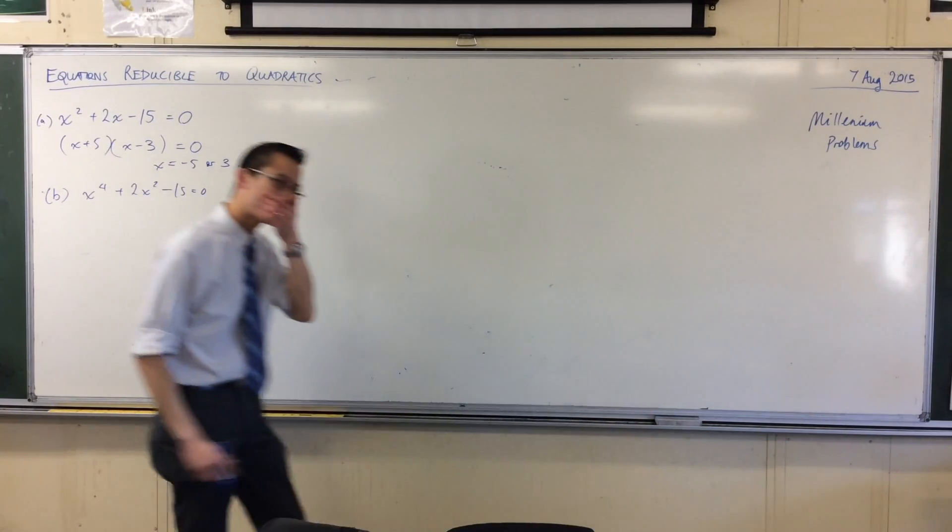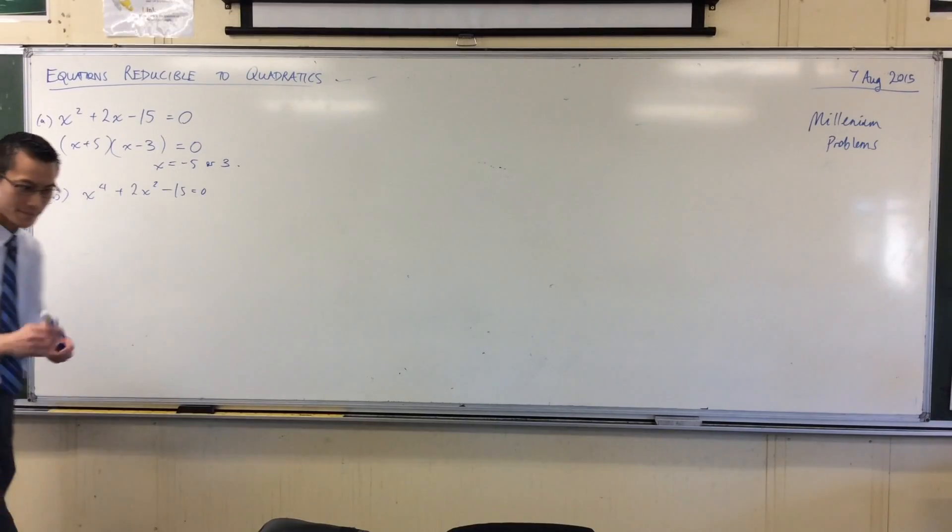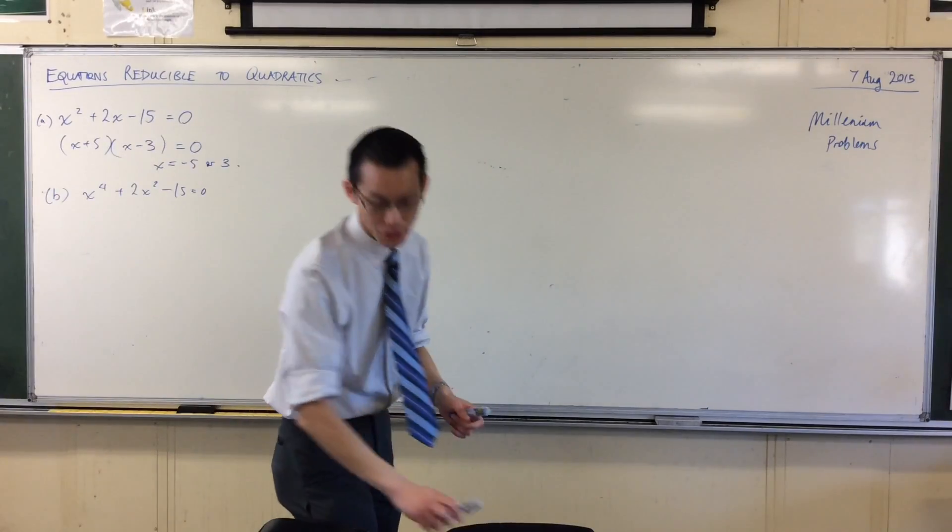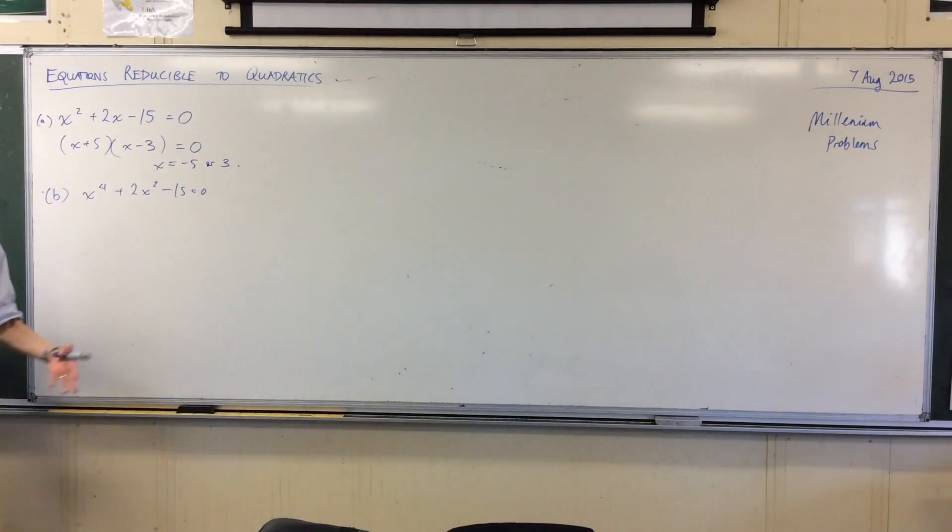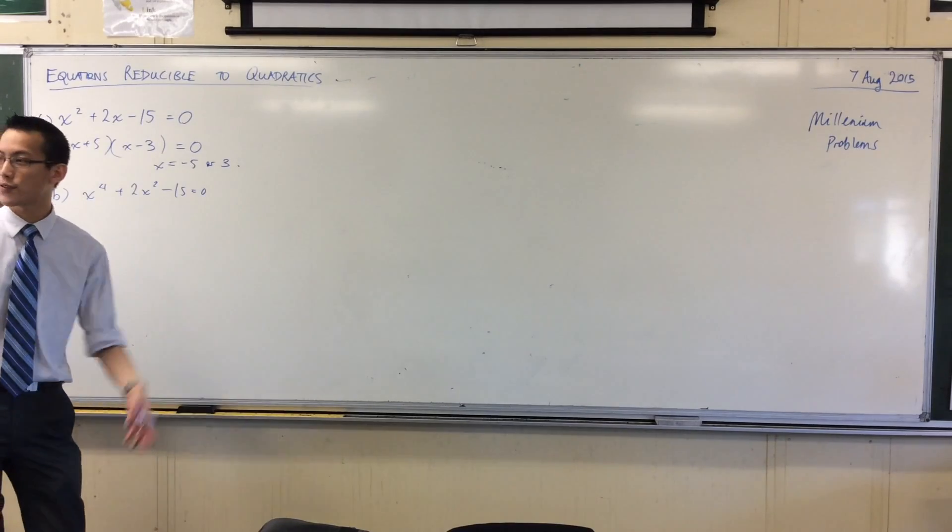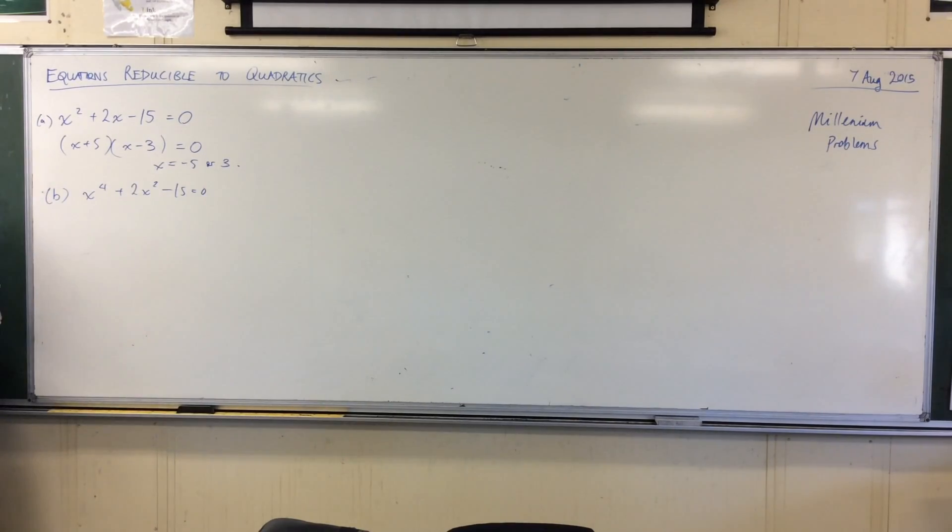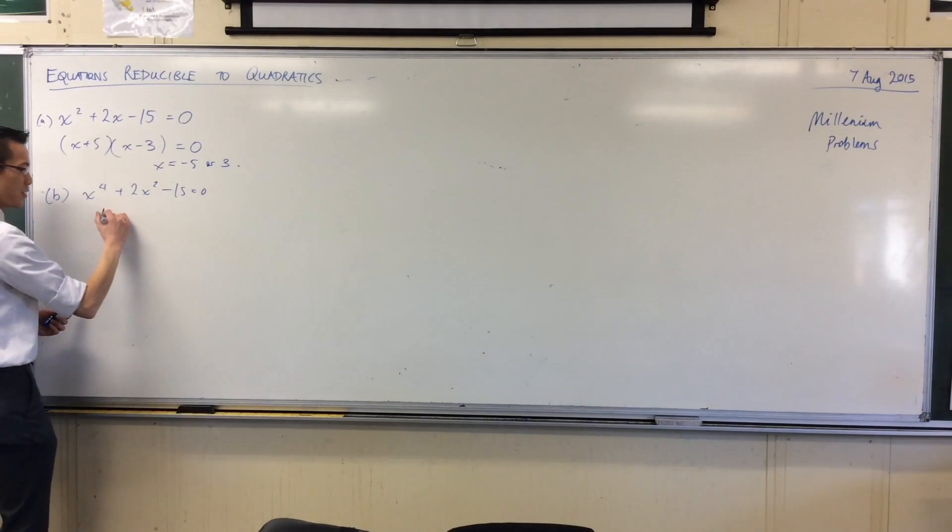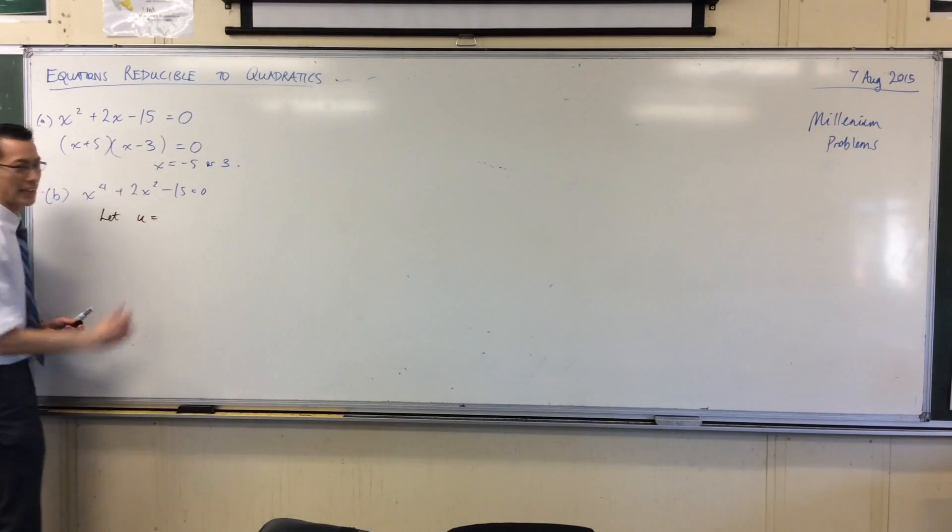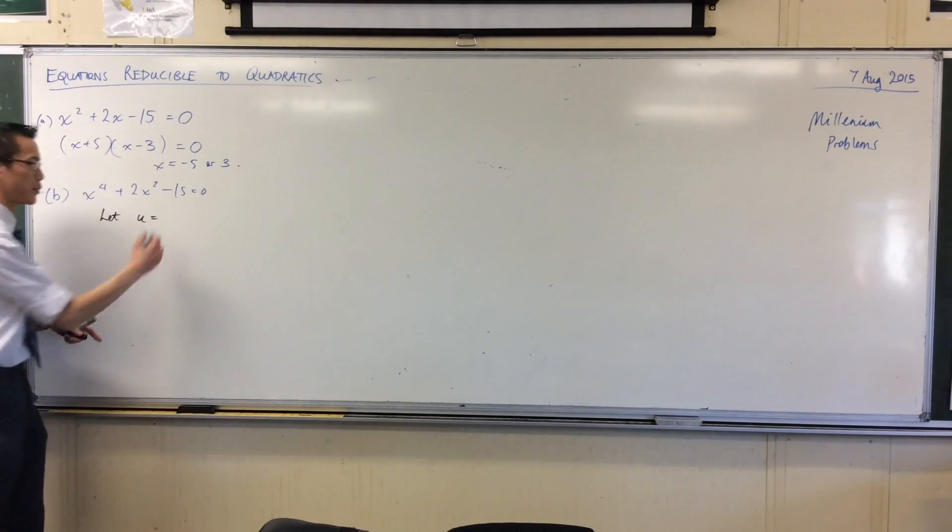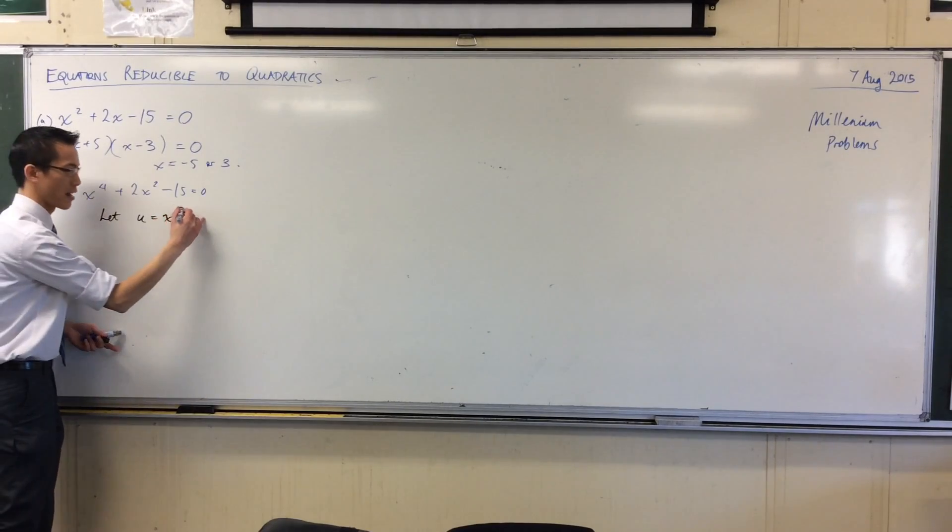Suggestions? Can you let x squared equal like d? Okay, so I can introduce a substitution. Now I can choose any letter I like, but just for the sake of consistency, so you're familiar with the convention, the normal letter that people use is u. So I'm going to say let u equal x squared. So if that's the case.